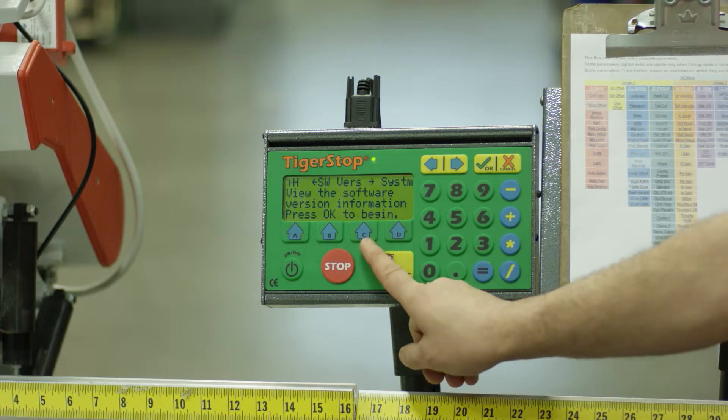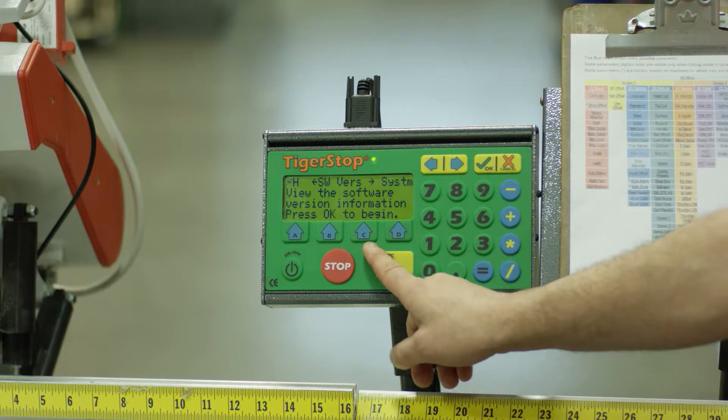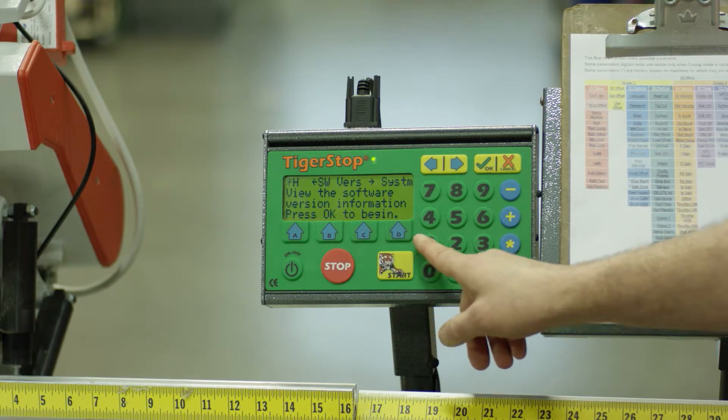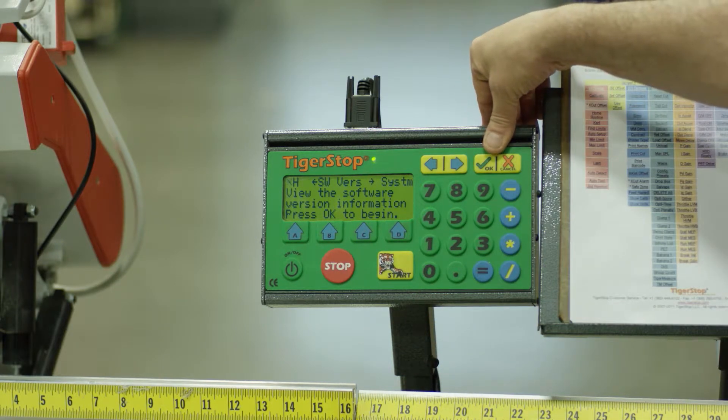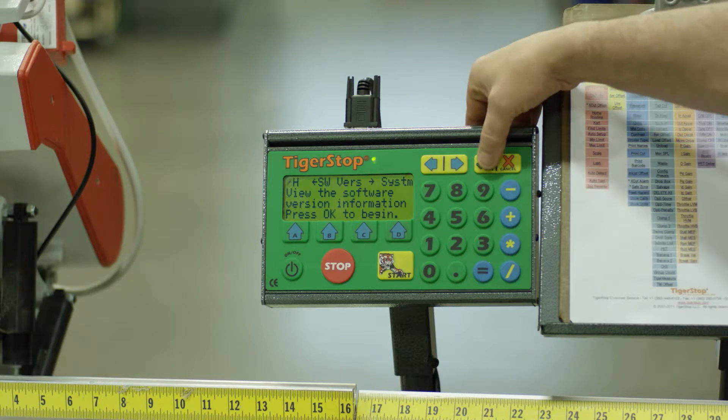You'll notice to view this software version, press OK to begin. The OK button is located in the upper right corner. When I've pressed OK,